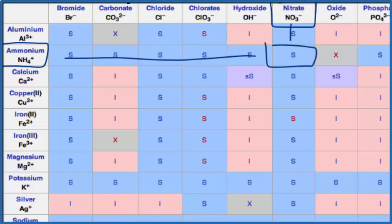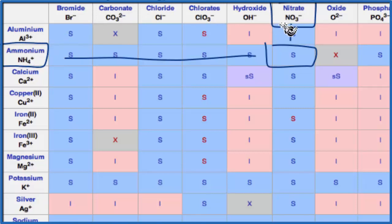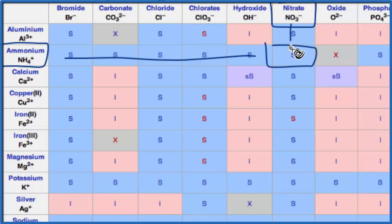When we put ammonium nitrate in water it'll dissolve — it'll dissociate into the NH4 plus ion, which will be aqueous, and the nitrate ion NO3 minus, which will also be aqueous, dissolved in the water.